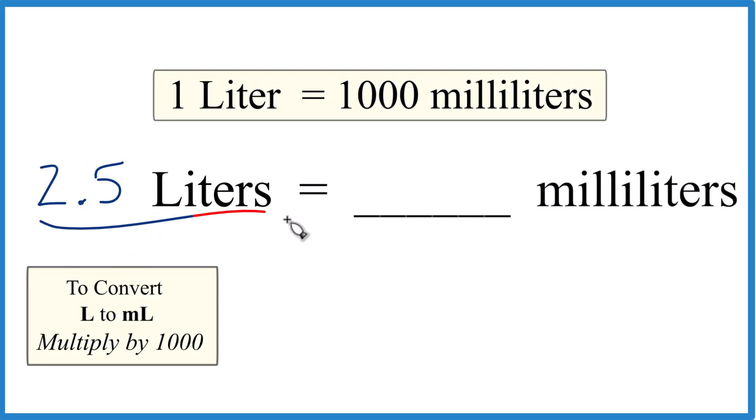If you need to convert 2.5 liters to milliliters, here's how you do it. 1 liter equals 1,000 milliliters. This is our conversion factor.